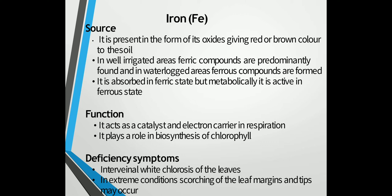Iron is fairly present in the form of its oxides giving red or brown color to the soil. In well-irrigated areas ferric compounds are predominantly found and in waterlogged soils ferrous compounds are formed. The availability of iron in plants increases with acidity and is decreased by the addition of phosphates. It is absorbed in ferric state but metabolically it is active in ferrous state.